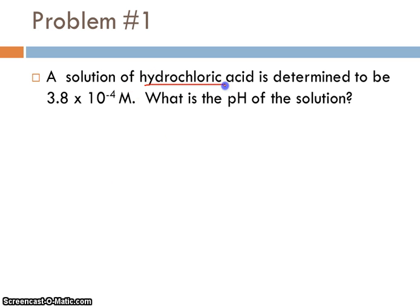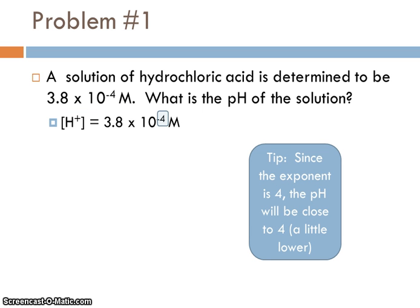A solution of hydrochloric acid is determined to have a concentration of 3.8 times 10 to the minus 4th molar. What's the pH of the solution? Well, the first thing I want you to recognize is hydrochloric acid is a strong acid. And therefore, the concentration of H plus is equal to the concentration of the acid. So the H plus concentration is 3.8 times 10 to the minus 4th molar. Also, because of the logarithmic nature of the pH scale, the exponent in the concentration was 4. Well, negative 4. But because we've got that 4 in there, that means our pH is going to be close to 4. It turns out it's going to be a little bit less than 4. But it gives you a ballpark, an estimation for the answer.